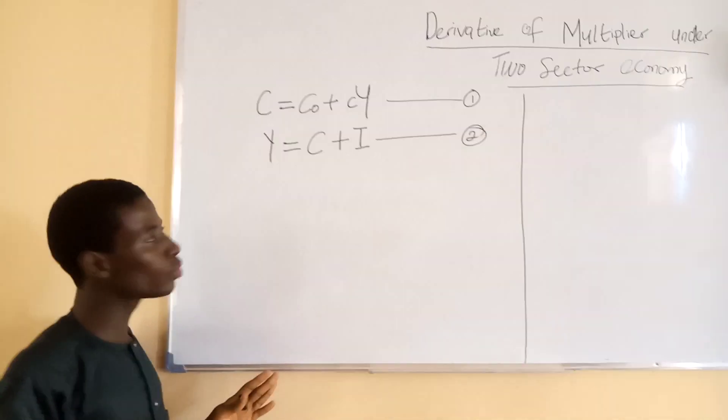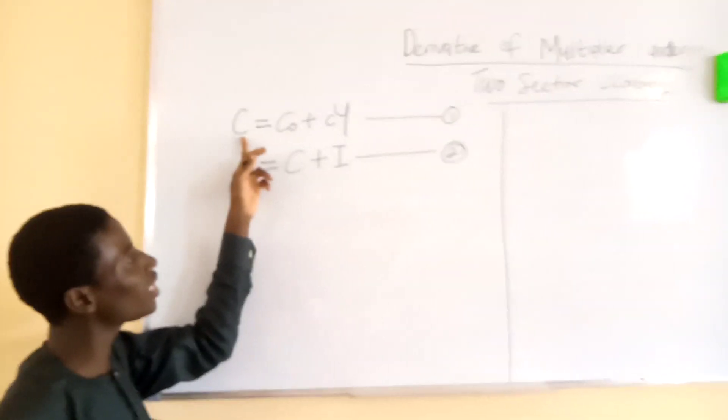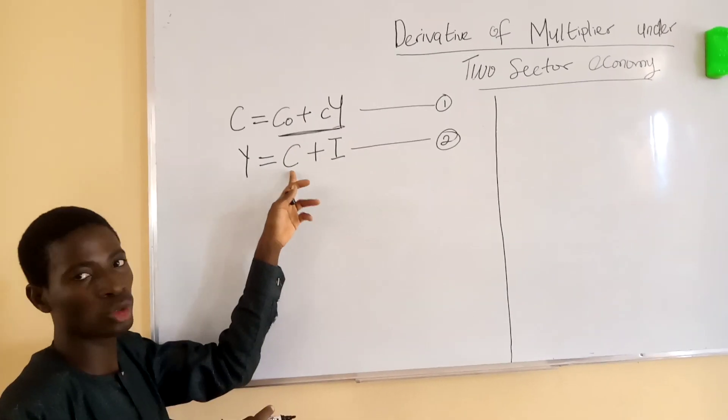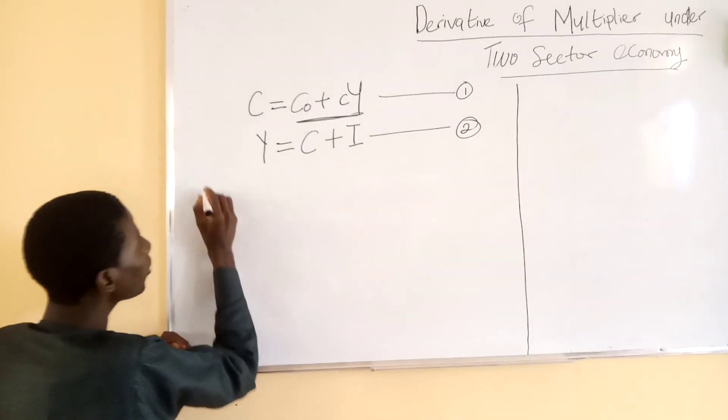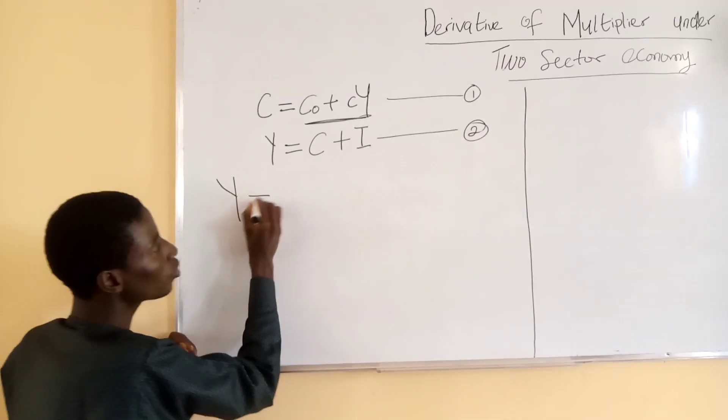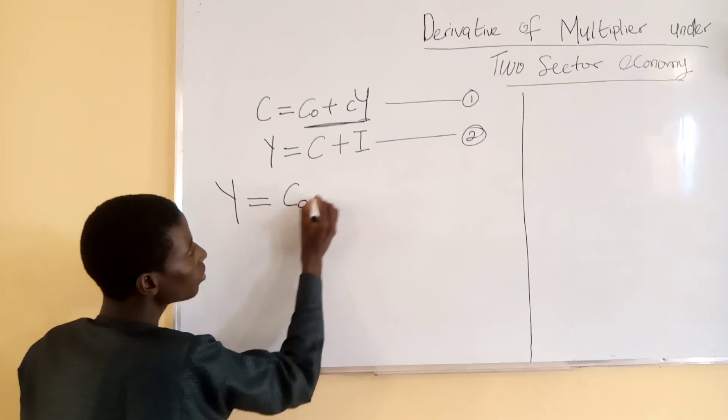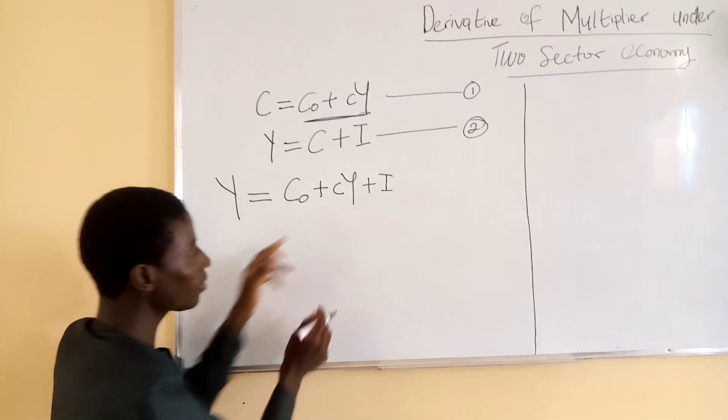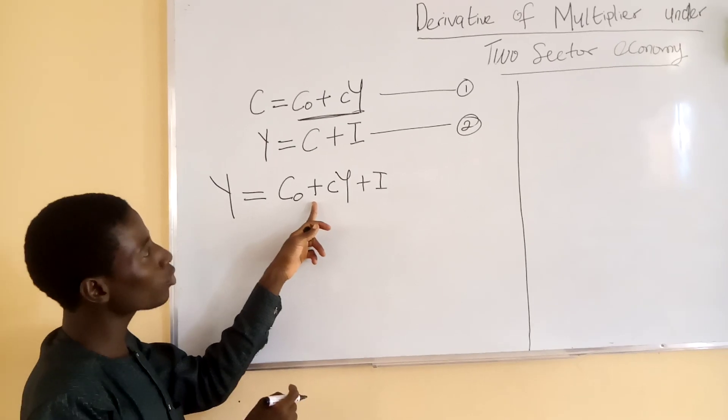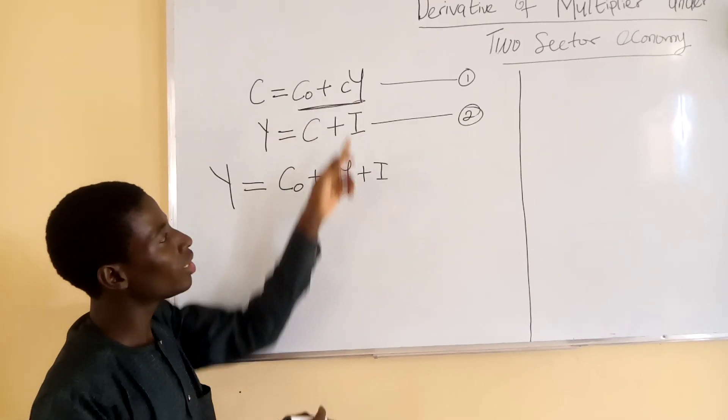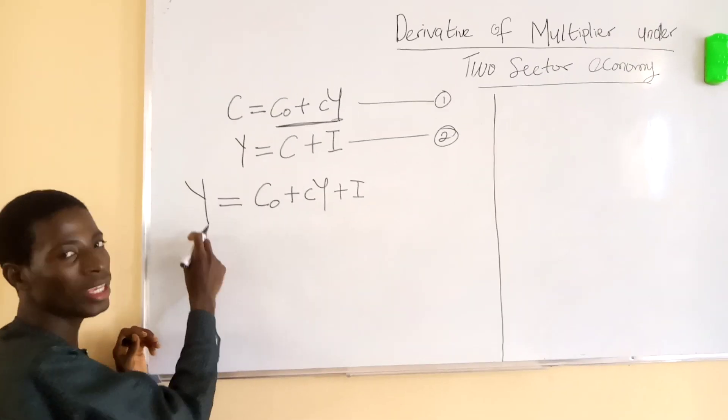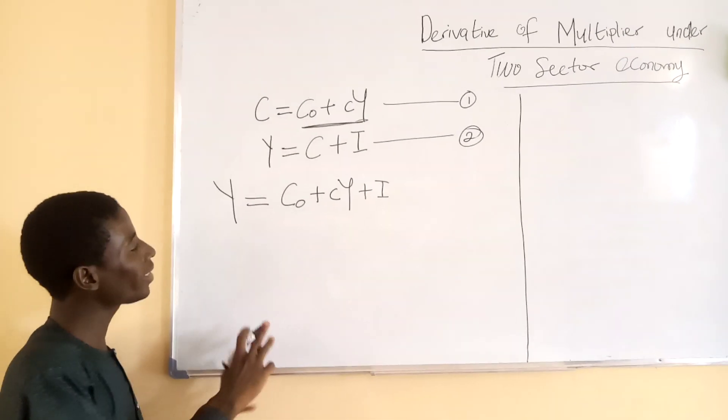What we have to do is substitute the value of C in equation one into equation two. We can have our Y income equal to C sub zero plus cY plus I. We have tried to substitute equation one inside equation two. By normal analysis, we can collect like terms.